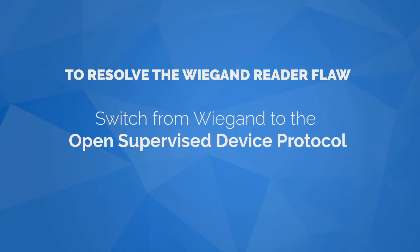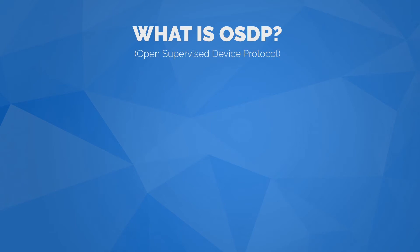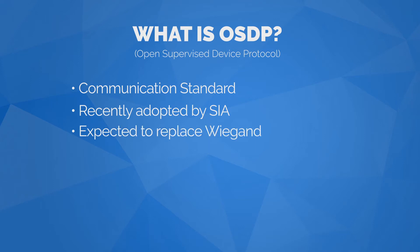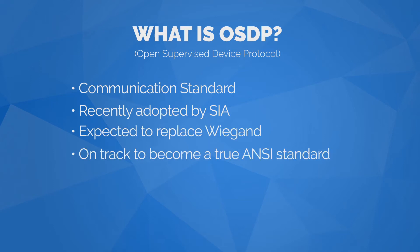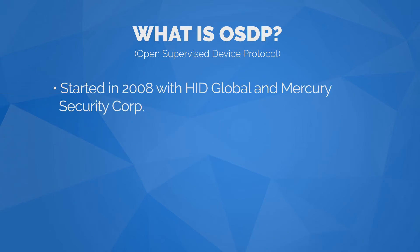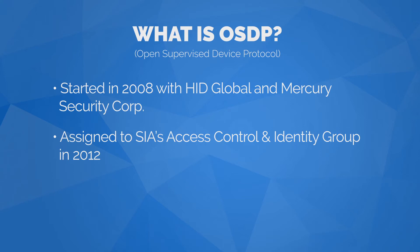Resolve the WeGand reader flaw by switching to the Open Supervised Device Protocol with secure channel. OSDP is an access control communication standard. It was recently adopted by the Security Industry Association and is expected to replace WeGand. OSDP is on track to become accredited by the American National Standards Institute as a true ANSI standard. Development of the OSDP protocol was initially undertaken by companies such as HID Global and Mercury Security Corp. The work was later assigned to SIA's Access Control and Identity Group.